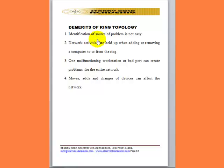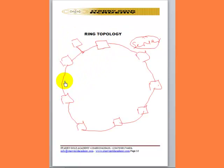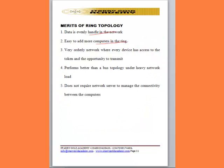However, ring topology has disadvantages. First, identification of the source of a problem is not easy — troubleshooting is harder compared to star topology. Second, network activities are halted when adding or removing a computer from the ring, because tampering with the cable stops data transmission and affects all users.